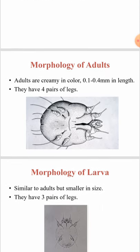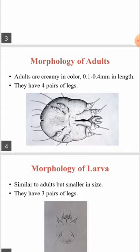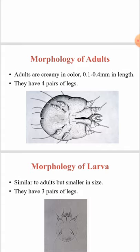The important points about the morphology of the adult and larva. The adult, as you can see in the picture, is creamy in color. It is 0.1 to 0.4 millimeters in length, and it has four pairs of legs.